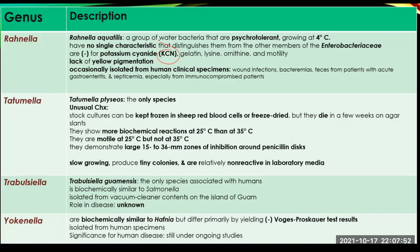Tatumella is the only species in its genus and has unusual characteristics. Stock cultures can be kept frozen in sheep red blood cells or freeze-dried, but they die in a few weeks on agar slants. They show more biochemical reactions at 25°C compared to 35°C, and motility is only observed at 25°C but not at 35°C. They demonstrate large 15 to 36 millimeter zones of inhibition around penicillin discs and are slow growing, producing tiny colonies and relatively non-reactive in laboratory media.